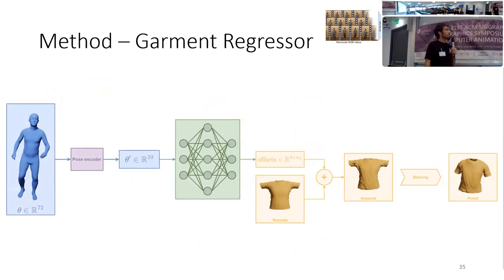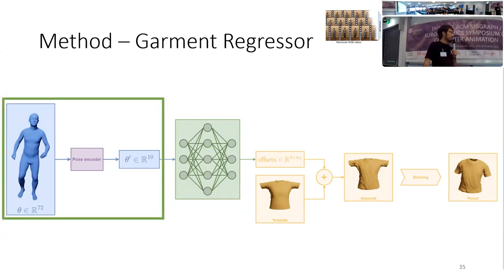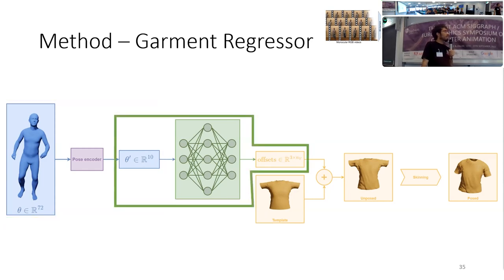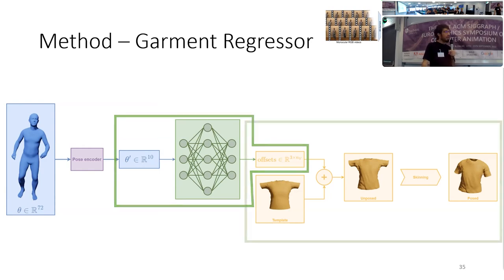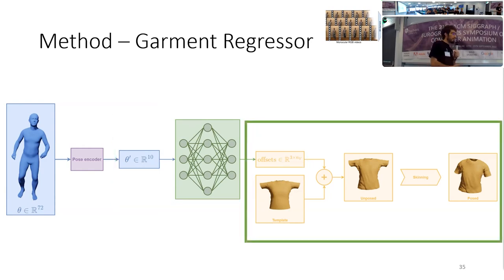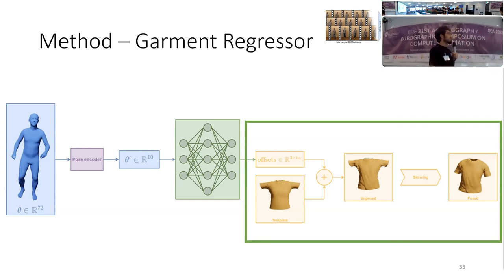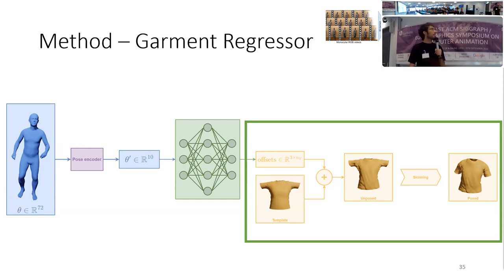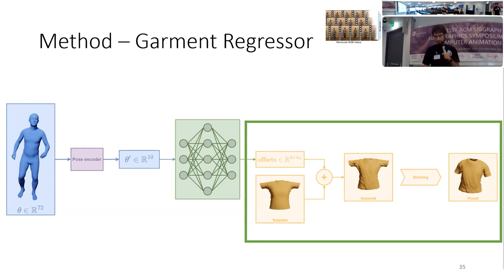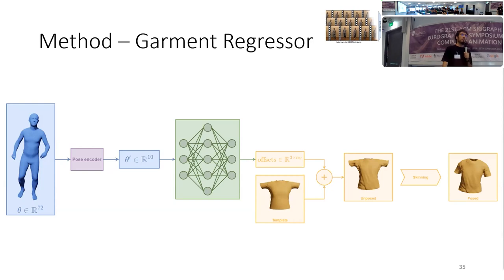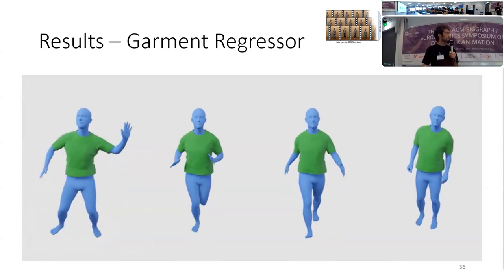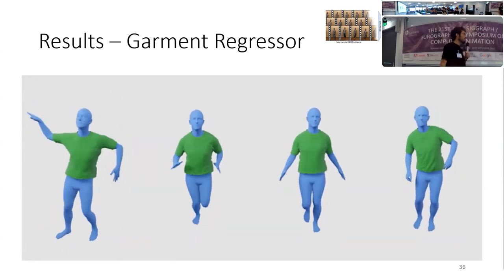This is the full forward process: we start with a high-dimensional pose, encode it to a smaller representation, use the regressor to predict the offsets, then apply the simplification — we take the template, add the offset, and apply the same skinning function to get the posed garment. This gives us the reconstructed t-shirt for the input pose. Once training is finished, this can be applied to unseen poses. You can see how the wrinkles make sense for each new pose.